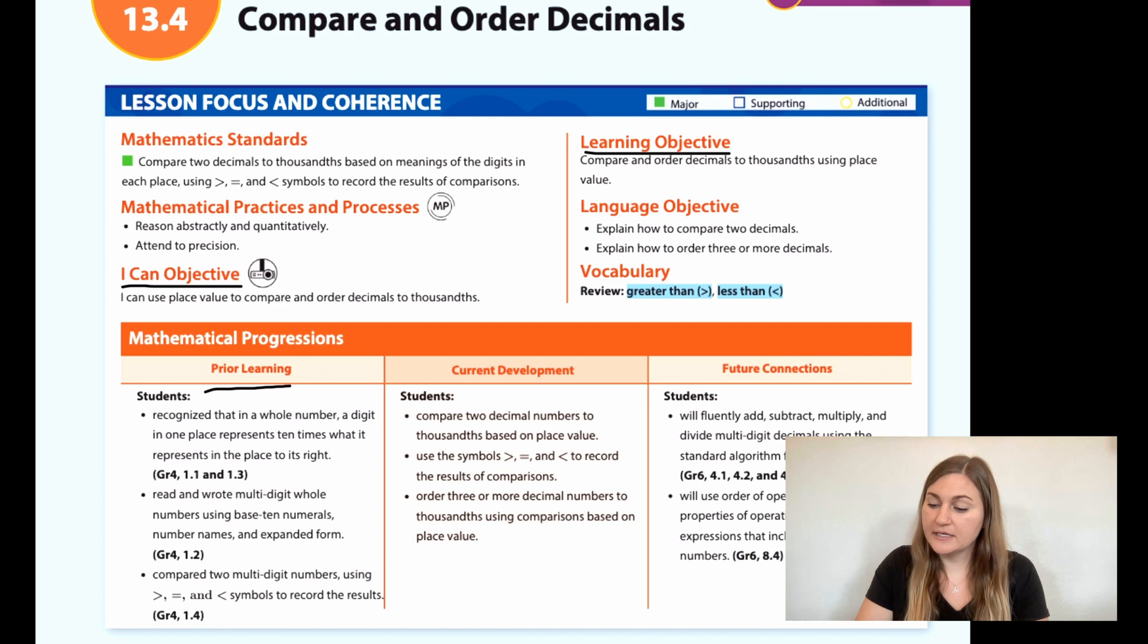The prior learning is that students recognized that in a whole number, a digit in one place represents 10 times what it represents in the place to its right. Students read and wrote multi-digit whole numbers using base 10 numerals, number names, and expanded form. Students compared two multi-digit numbers using greater than, equal to, or less than symbols to record the results.